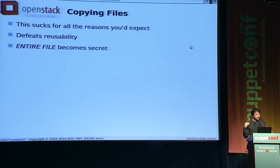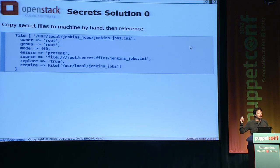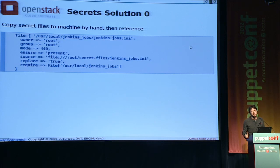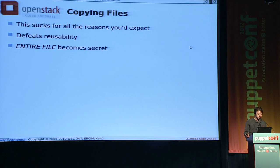The other problem — my big beef with it — is that the entire file becomes secret. This is an INI file. In that INI file there is a password line, but the whole file is stuck into the secret thing, so if you're trying to read the module to figure out what we're doing, you're missing information. Please, nobody watching at home think, 'oh god, that solves my problem, I can just copy files onto the machine by hand and tell Puppet where they are.' It's terrible.